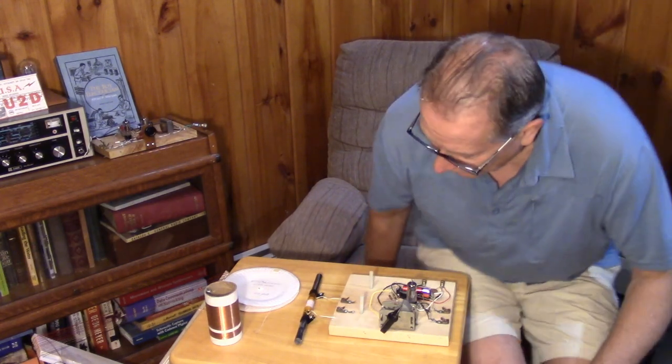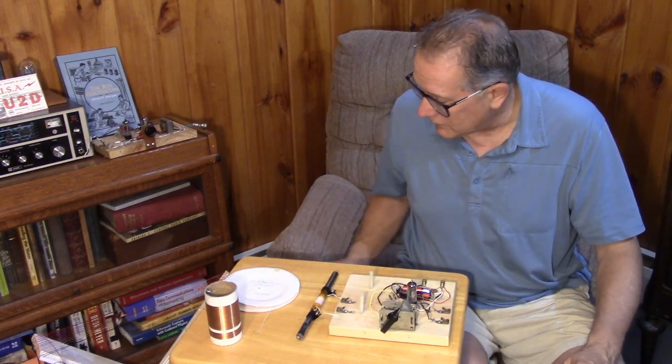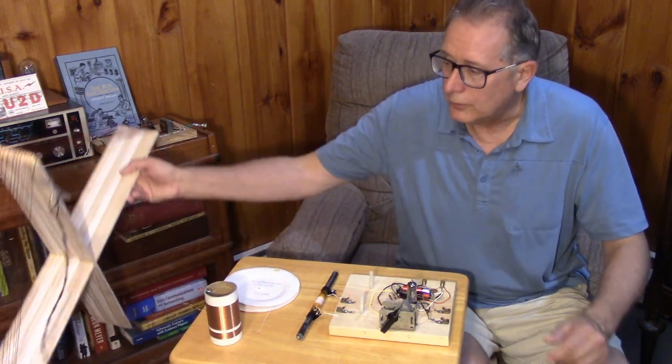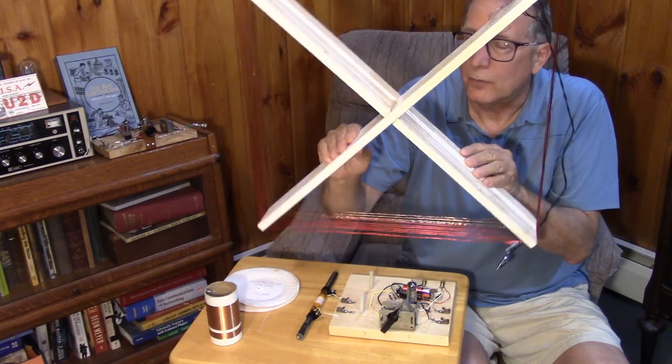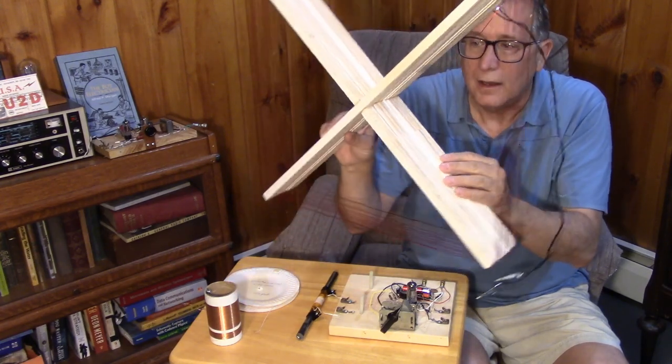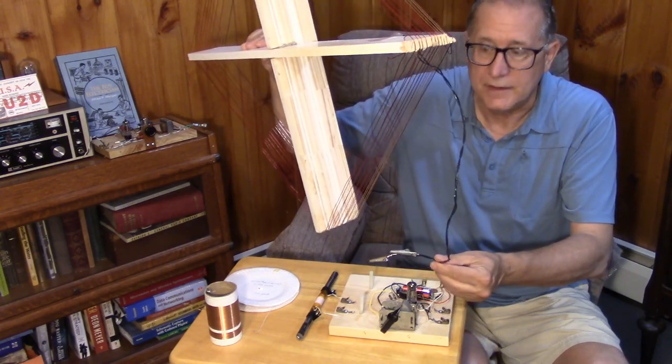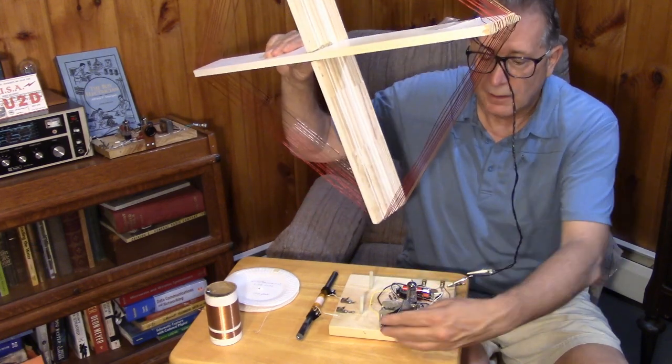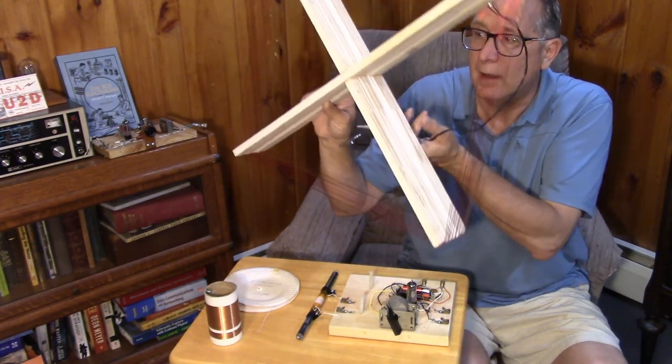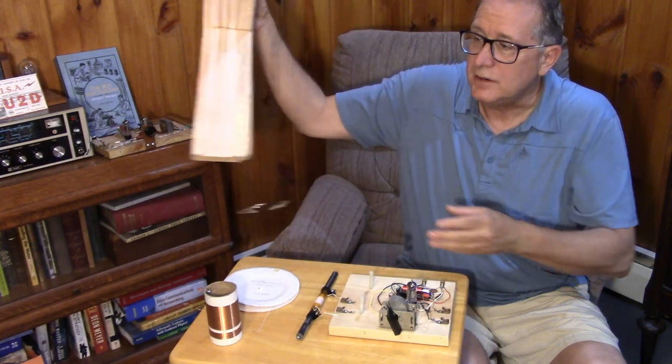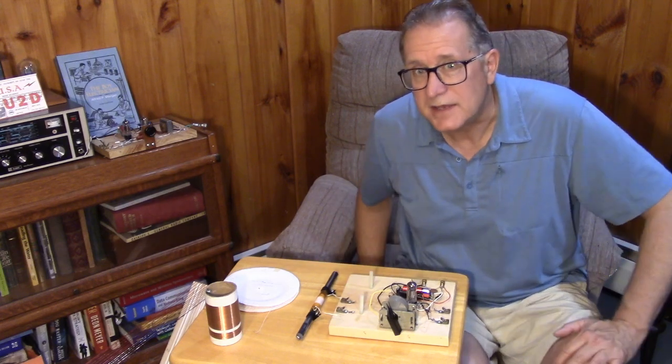Also, once we're done looking at the ferrite rod tuning, we're going to look at a homebrew frame antenna, and this frame antenna has about 14 turns of number 20 enameled wire. It's just got a twisted pair, and these are going to attach to the grid and ground terminals of the variable capacitor, and we'll see if we can tune the broadcast band with this frame antenna as well. So there's a couple of different indoor antennas that we're going to experiment with with our grid leak detector.